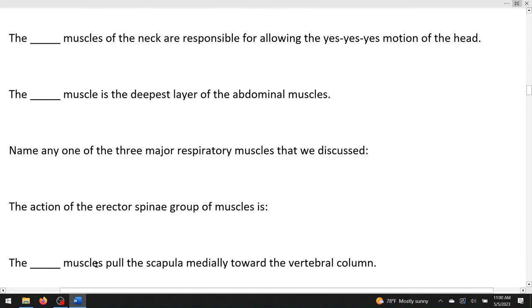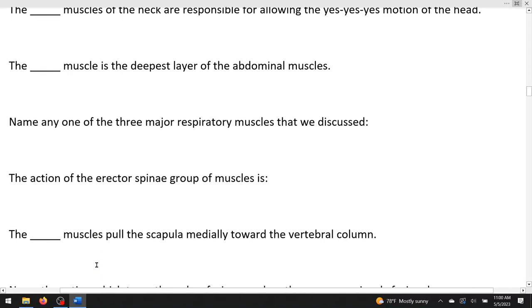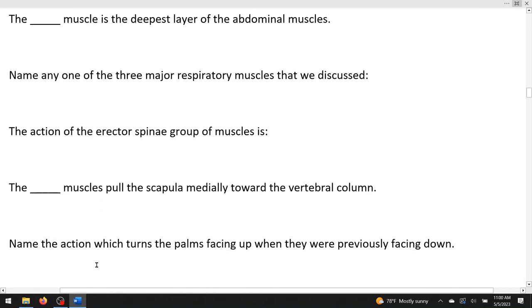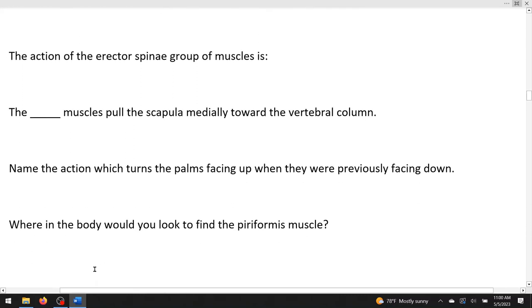The blank muscles pull the scapula medially toward the vertebral column. It's not quite levator scapula, but we're in the right area. The ones that pull it medially are the rhomboids, rhomboid major and rhomboid minor. Name the action which turns the palms facing up when they were previously facing down. So again, if you turn your palms up, it's like you're begging for some soup, and we learned that means supination is palms up. So supination. Putting them down is pronation. Where in the body would you look to find the piriformis muscle? Well, it doesn't care where you would look. If you wanted to actually find it, you would look under the glutes, or the butt.